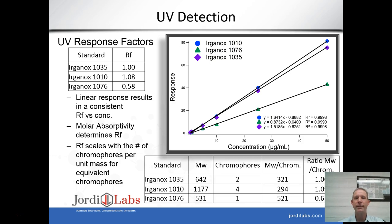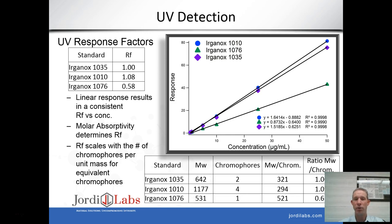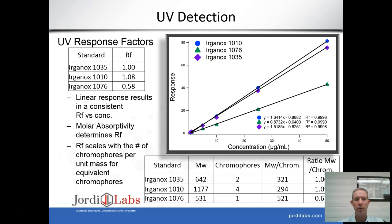Looking in more detail at the UV detector, the response factors have values of 1, 1.08, and 0.58 for the three Ergonox compounds. That means we would only get back 58% of the true value for Ergonox 1076 if using Ergonox 1035 as the surrogate. The responses are all linear, and the molar absorptivity determines the response factor — if a compound absorbs more light, we get a stronger response.